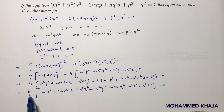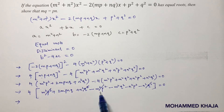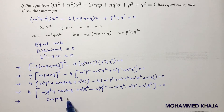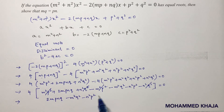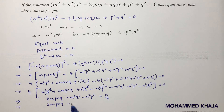After canceling m²p² and n²q², we are left with 2mpnq − m²q² − n²p² = 0.